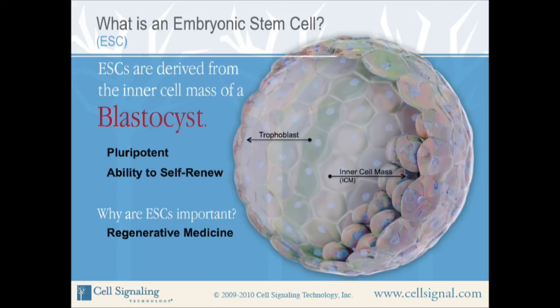Scientists study ESC pluripotency and differentiation with the hopes to create new, healthy cells and or organs in diseased patients. For example, new neurons could be created for patients with spinal cord injuries or blood cells for patients with leukemia.